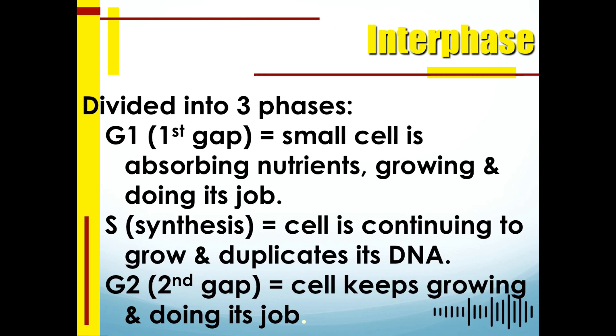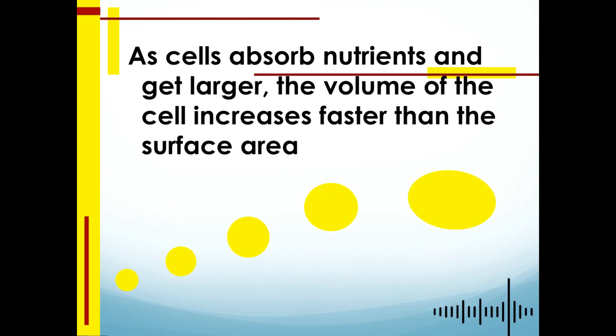To show you the illustration for you to be able to understand it clearly, as you can see here from a small cell during gap one, or G1, up to G2 or gap two, from one identical daughter cell up to a mature cell. You will see that there is an increase of growth, an increase of size, because the cell during this time is absorbing nutrients, so that's why it becomes larger.